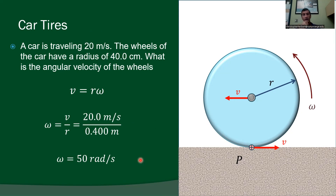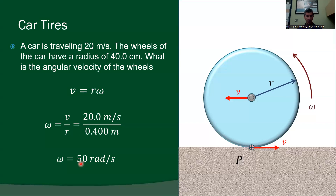Let's do an actual calculation. A car is traveling at 20 meters per second and the wheels have a radius of 40 centimeters. What is the angular velocity of the wheels? Using v equals r-omega, omega equals v divided by r — 20 divided by 0.4 — gives an angular velocity of 50 radians per second. To get the frequency of rotation, divide by 2-pi.